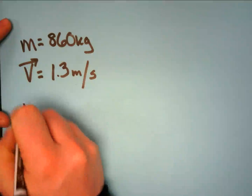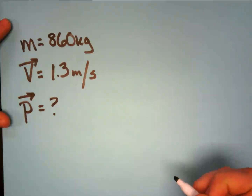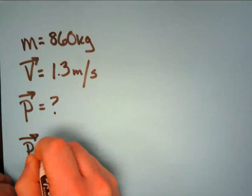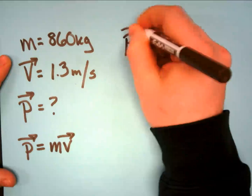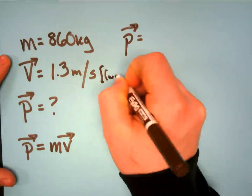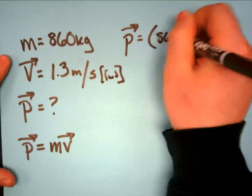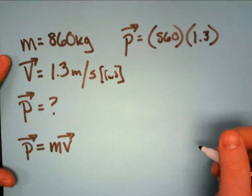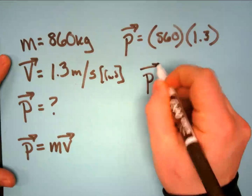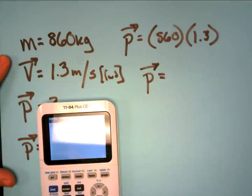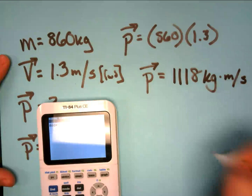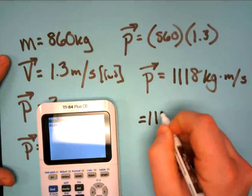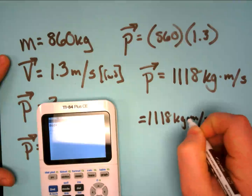We need to find the momentum. Momentum is equal to mass times velocity, so P is going to be equal to 860 times 1.3, which is going to be 1,118 kilograms times meters per second. We're not done yet — it is going to be 1,118 kilograms times meters per second forward.